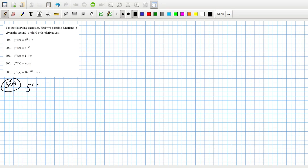Anti-differentiate once and I'll get x cubed over 3 plus 2x plus a constant. Anti-differentiate again and I'll get x power 4 over 12 plus x squared plus ax plus b.